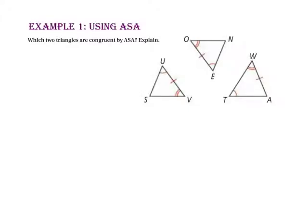In example one, we will use angle-side-angle. Which two triangles are congruent by angle-side-angle? To use the angle-side-angle postulate, congruent corresponding sides must be included between the two congruent corresponding angles. In triangle-SUV, we have angle-U, side-UV, and angle-V — so side-UV is included between the two given angles.